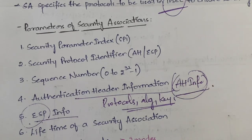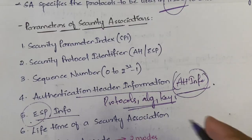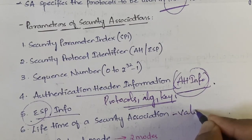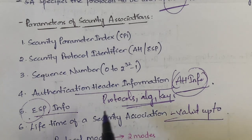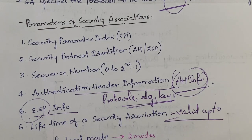Next is the Lifetime of a Security Association. That is nothing but up to how many days, how many months, or how many minutes that particular security association is valid. The lifetime specifies the duration for which that particular security association remains valid.